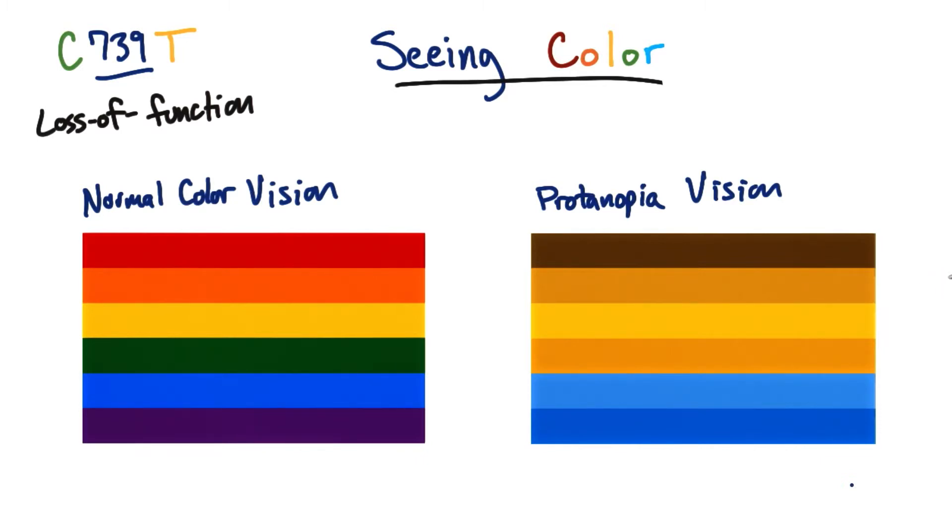Pure reds cannot be seen; they instead appear dark and black. Purple colors can't be distinguished from blues, and more orange-tinted reds appear as very dim yellows.